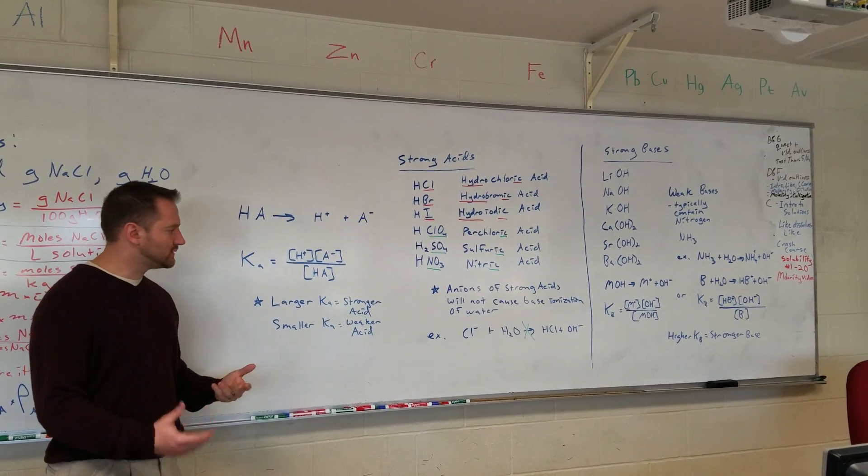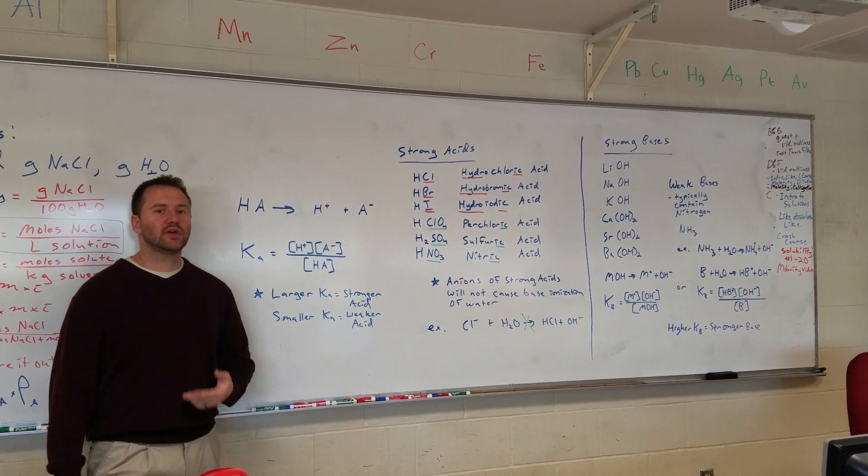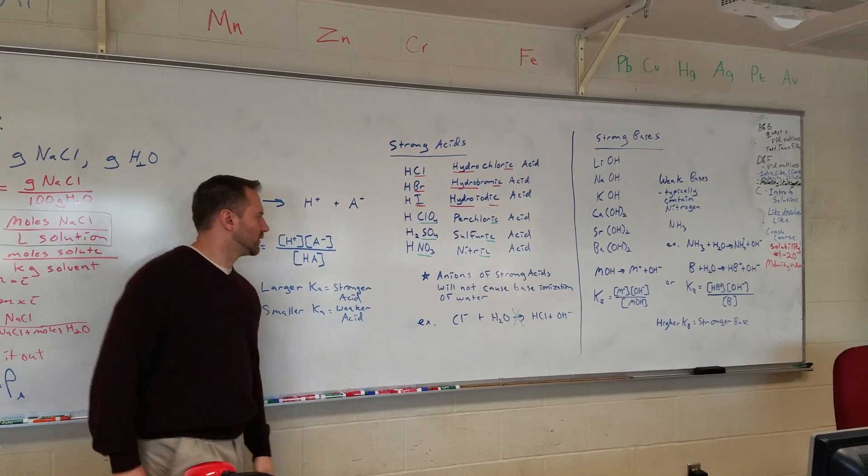So if you have a strong acid, it's going to have a large Ka. If you have a smaller Ka, that means you have a weaker acid.